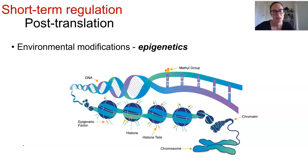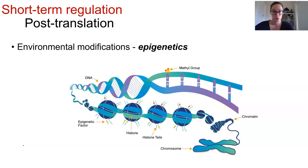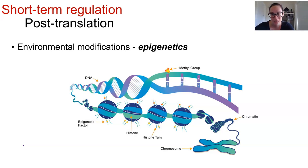These types of epigenetic changes are caused by things like chemical exposure — so smoking and organic pollutants. They can be caused by stress levels, your diet, and interestingly, they can be passed down onto future generations into new offspring. This leads to some really interesting research across many generations of the same family.